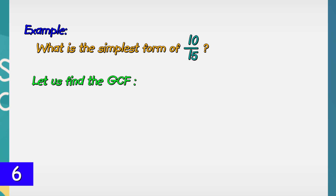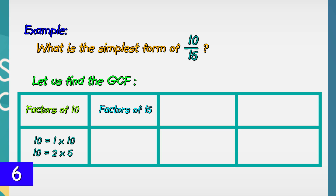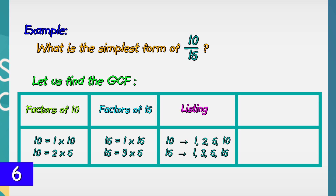What is the simplest form of 10/15? Let us find the GCF of 10 and 15. The factors of 10 are: 1 × 10 = 10, and 2 × 5 = 10. The factors of 15 are: 1 × 15 = 15, and 3 × 5 = 15. Listing all the factors of 10 and 15, the GCF of 10 and 15 is 5.